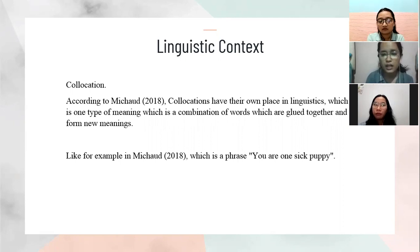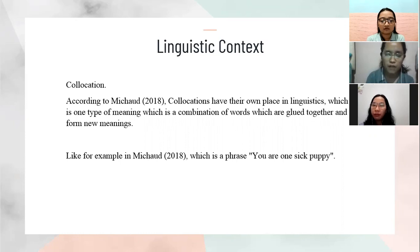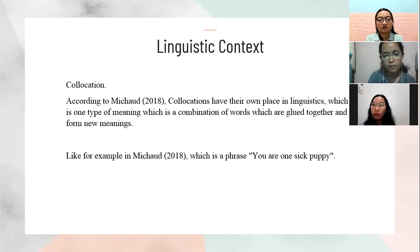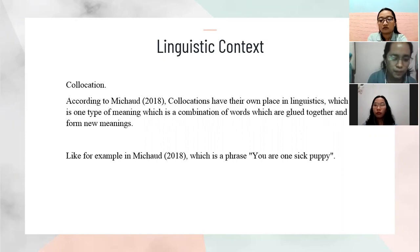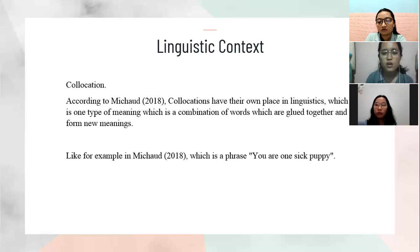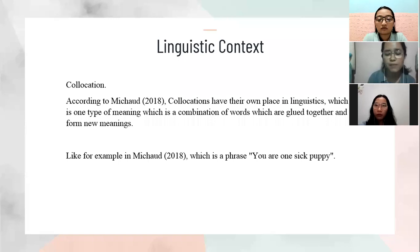The last one in linguistic context is collocation. According to Michaud (2018), collocations have their own place in linguistics — they are one type of meaning which is a combination of words that are linked together and form new meanings. Every word must have a meaning, but with collocation, every word that is combined can help each other to bring up a new meaning used in general. For example, the phrase 'you are one sick puppy' — each word has its own meaning, but when combined, the phrase refers to someone who is mentally disturbed, attention-seeking, disgusting, or insane, who does or says something revolting or bizarre.